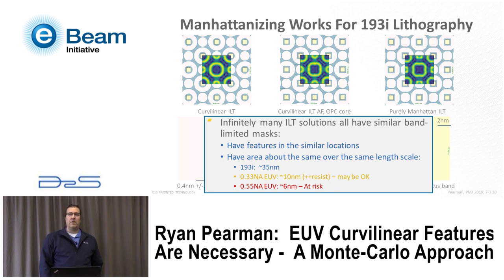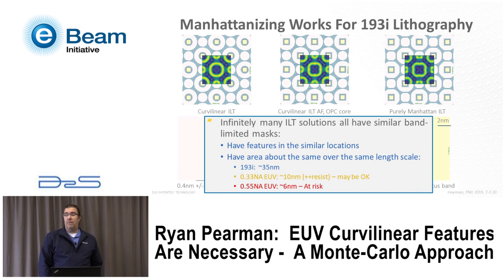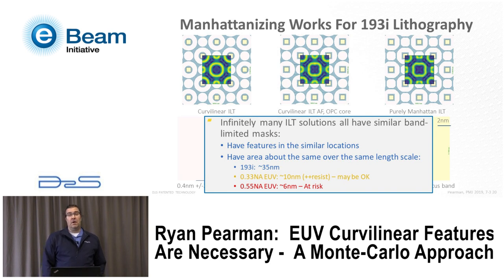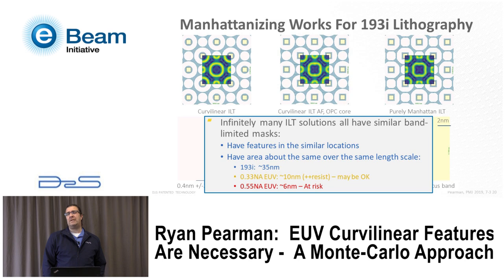There's an infinite number of masks you could create. The prescription used in the ILT industry today ensures that the Manhattan mask has features in the same places as much as possible as a curvilinear mask, and where they can't match in space, they try to maintain the same area over the optical length scale. For immersion lithography that's about a 35nm length scale and is relatively easy. For 0.33NA EUV, that's about a 10nm length scale — which can become problematic for a 20nm contact.